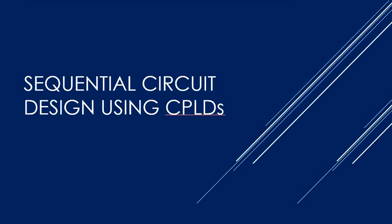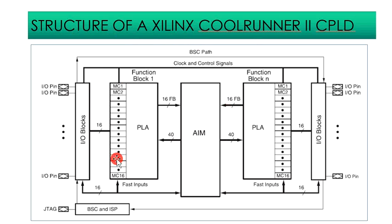Moving on to sequential circuit design using CPLDs. This is the structure of a Xilinx CoolRunner II CPLD, which uses a PLA in each function block. As you can see, there is a PLA in each function block — this is block 1, and you have n number of blocks.